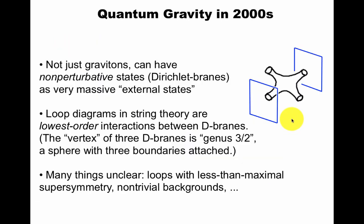Quantum gravity in the 2000s, so you can take Bryce DeWitt's drawing here of a string diagram. You put non-perturbative states as external states, like Dirichlet branes, that I will talk about in a later video. Loop diagrams in string theory are then the lowest order interaction between these non-perturbative objects. However, many things remain unclear.